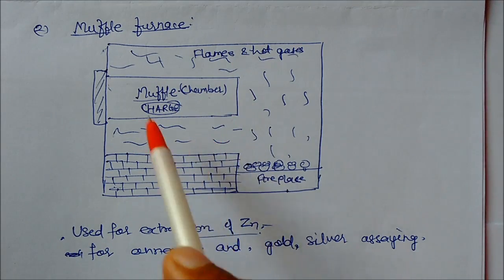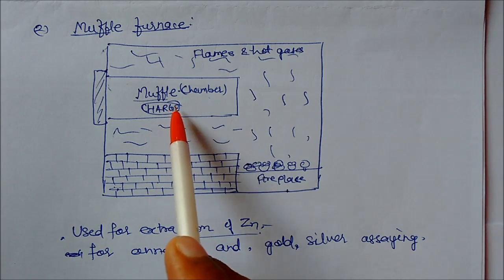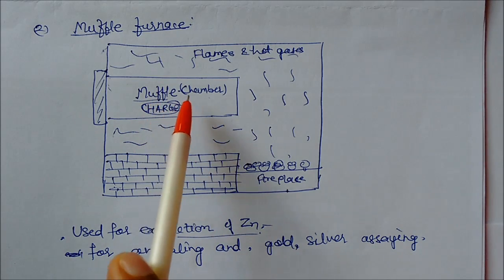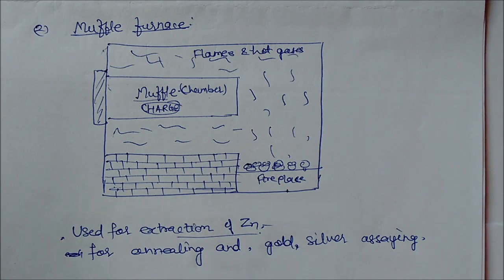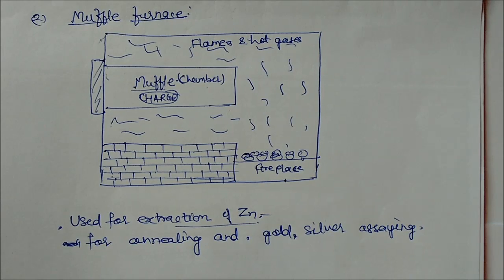This whole furnace is surrounded by hot gases and flames. These hot gases will burn this charge present in the muffle. It is used for the extraction of zinc, for annealing, and for assaying gold and silver. This is the use for muffle furnace.